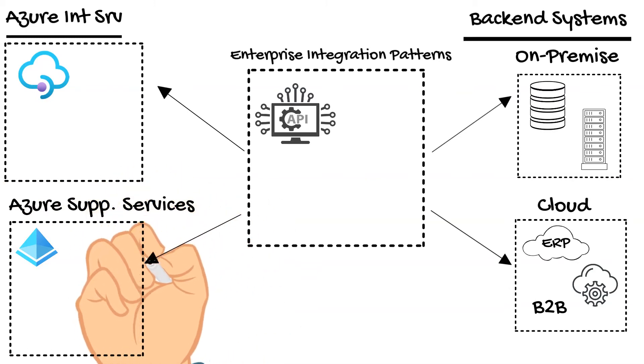These APIs could be on-premise APIs, APIs you've built in the cloud, or even partner APIs that you wish to control and monitor your organization's access to.